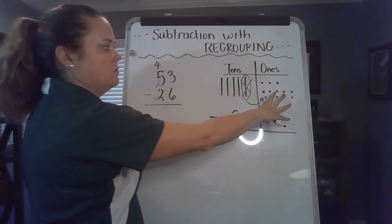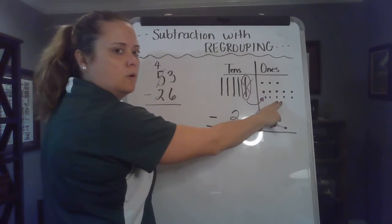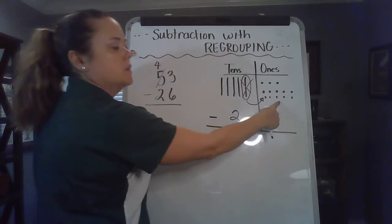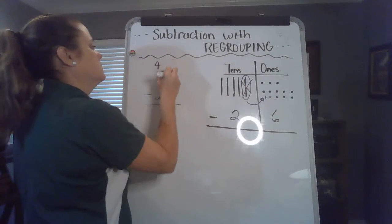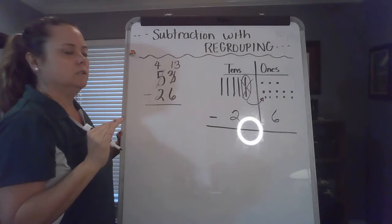And what does my ones place look like now? Now I have the three ones I already started with plus the ten more I added. So now I don't have three ones, now I have thirteen ones. So far so good.